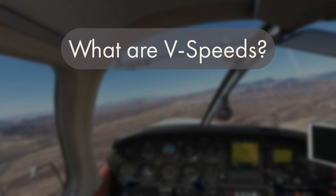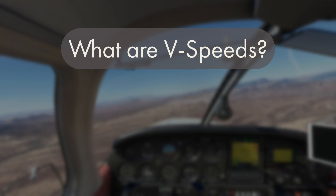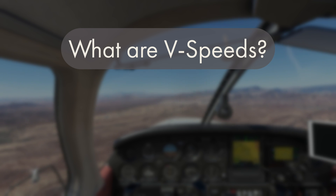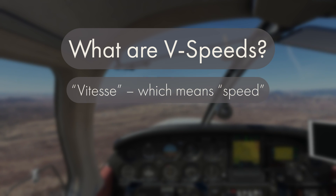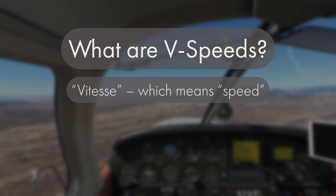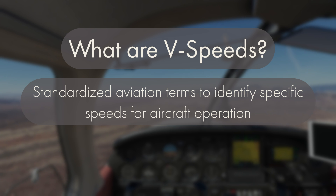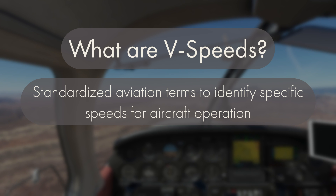So what exactly are V speeds? Most people see the V and think it stands for velocity, but the V actually stands for VTC, which is a French term meaning speed. Simply put, V speeds are standardized aviation terms used to identify certain speeds you need to know for your aircraft. Keep in mind there are a lot more than what we're going to talk about today, but these are the ones you need to know for your private pilot training.